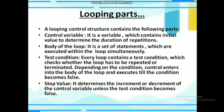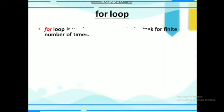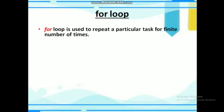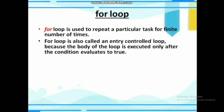The for loop is used to repeat a particular task for a finite number of times — that is, a fixed number of times. If we know the loop has to be repeated 10 times, we use the for loop. The for loop is also called an entry-controlled loop because the body of the loop is executed only after the condition is true.